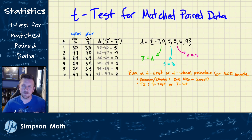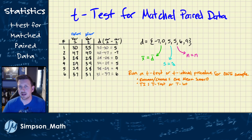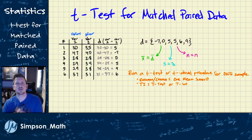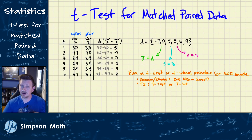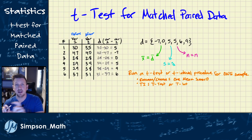Another example: a bodybuilding regimen where you want weight to increase because you're getting stronger. Or it could be something done simultaneously on the same person, like using one face wash on half your face and a different one on the other half for six weeks. Sometimes if the thing isn't repeatable, you find people who are as identical as possible and compare them, like pairing two people with similar starting cholesterol levels, ages, and gender.